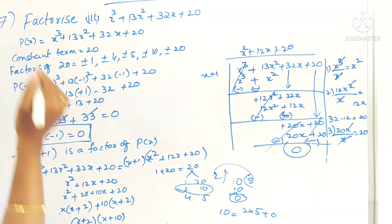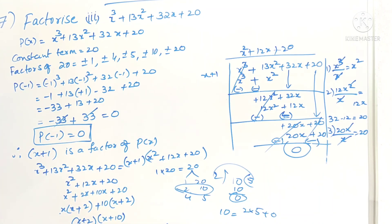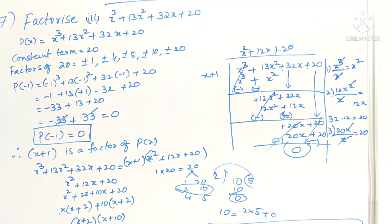So the factors of the given polynomial p(x) = x³ + 13x² + 32x + 20 are (x + 1)(x + 2)(x + 10). Students, this problem may look big but it's just simple substitution and polynomial division. It feels easy when you practice. Thank you for watching and please subscribe to my channel.